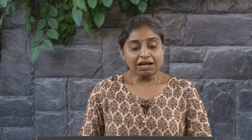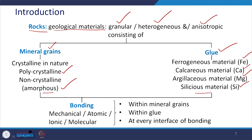Rock is a geological material that is granular, heterogeneous, and anisotropic, consisting of two components: mineral grains and glue. Mineral grains can be crystalline — either polycrystalline or amorphous. The glue material can be rich in iron, calcium, magnesium, or silica. When mineral grains and glue develop bonding — which can be mechanical, atomic, ionic, or molecular — within the mineral grain, within the glue, or at every interface, the resulting material is called rock.